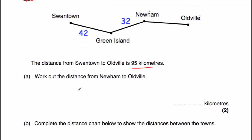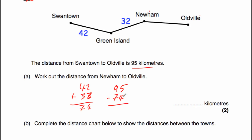We're going to do 42 plus 32. 2 plus 2 is 4, and 4 plus 3 is 7, so that's 74 kilometres from Swan Town to Newham. Then from Newham to Oldville it would be 95 take away 74. 5 take away 4 is 1, and 9 take away 7 is 2. So that distance would be 21 kilometres.